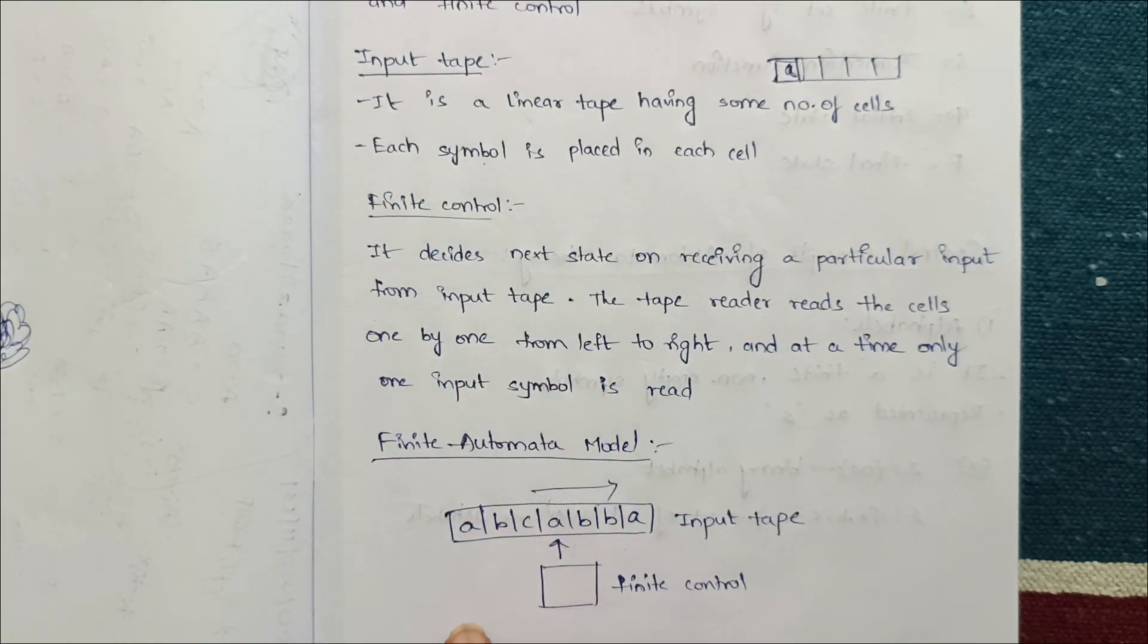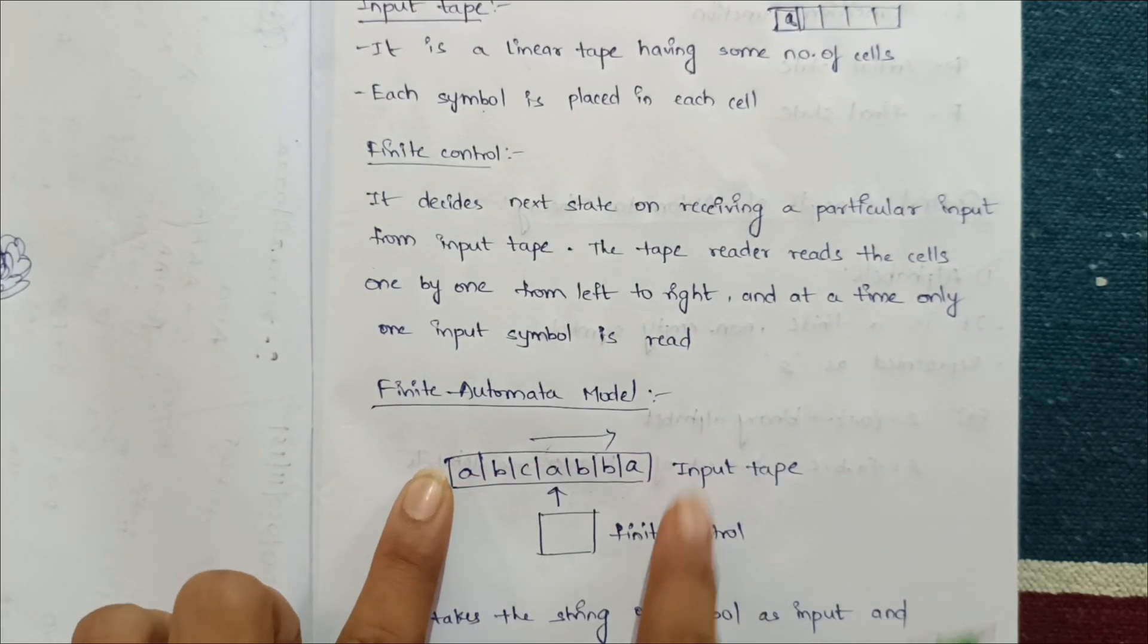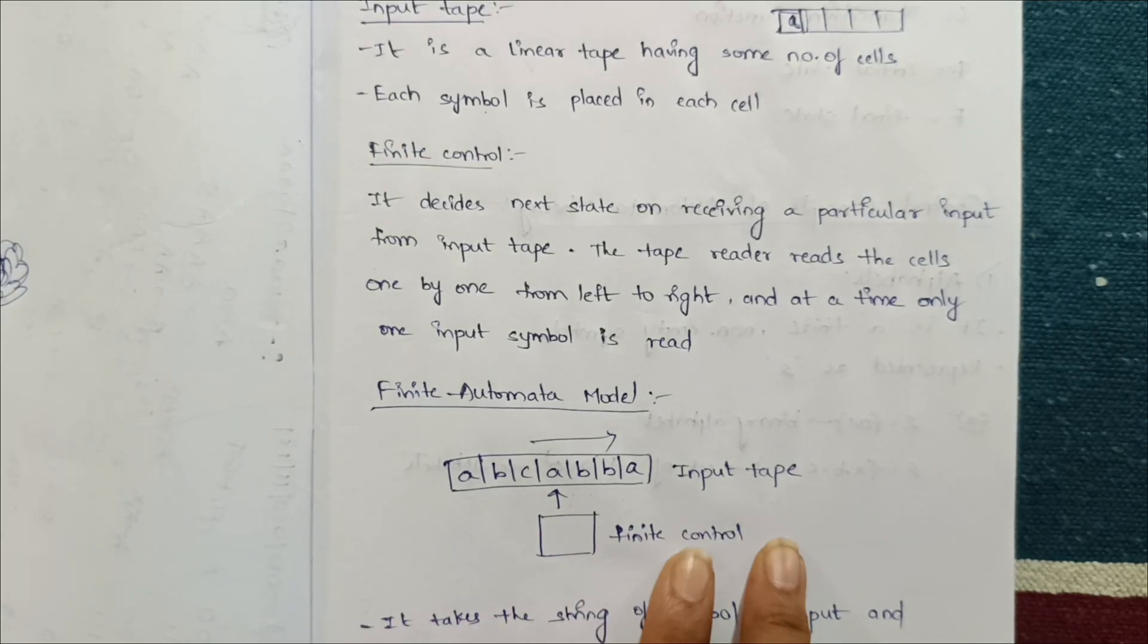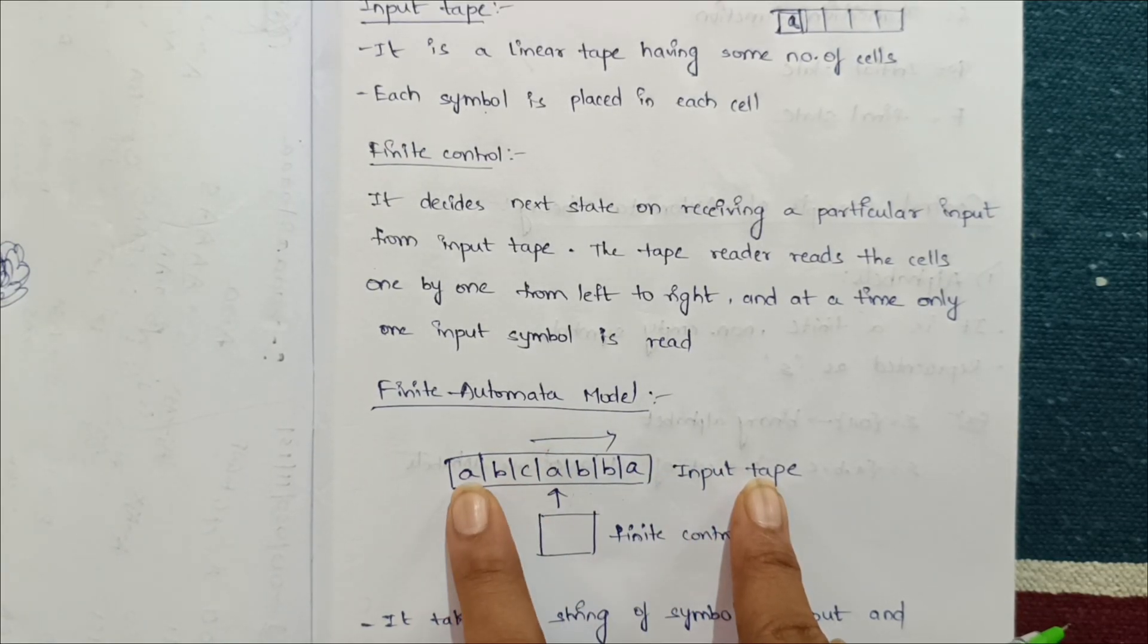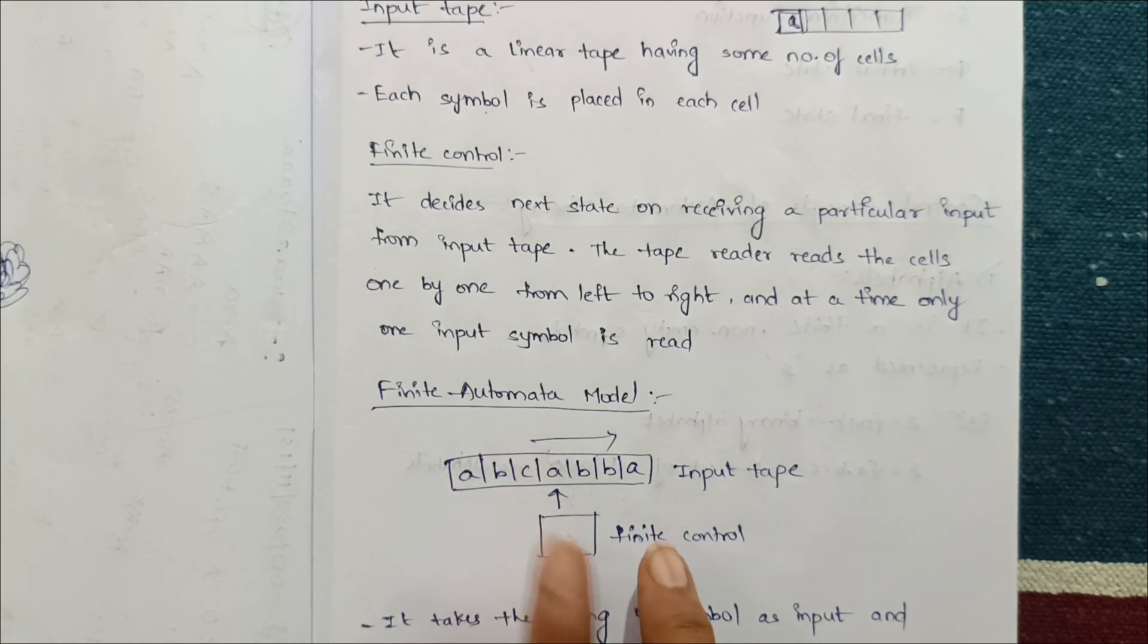Finite control decides the next state. For example, this is the finite control and this is the input tape. Input tape has a number of cells, and each cell has each symbol.